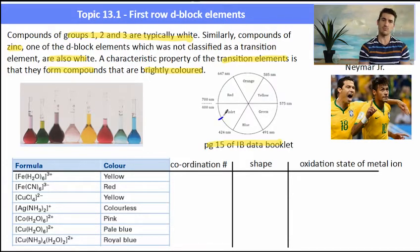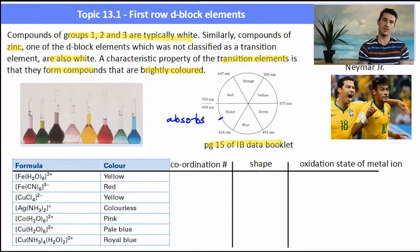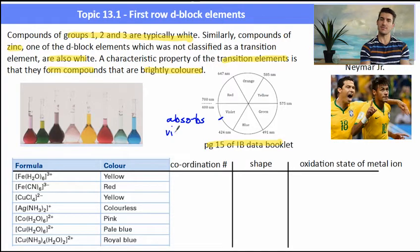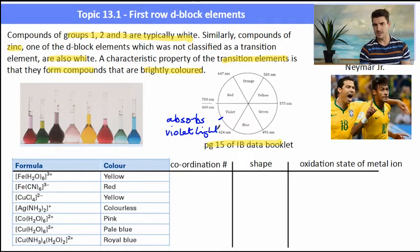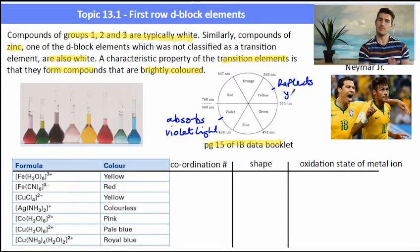For example, Neymar's jumper on the left is yellow, so it's reflecting yellow light. What's the opposite of yellow? Well, that's violet. So that means that shirt is absorbing violet light and reflecting yellow light — that's why we see it as yellow, but it's absorbing the violet coloured light.